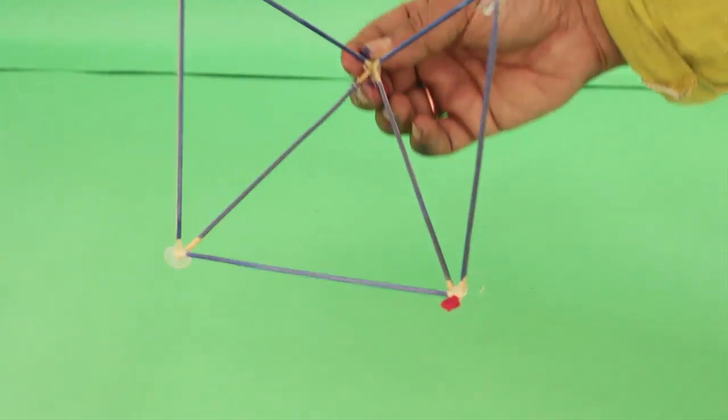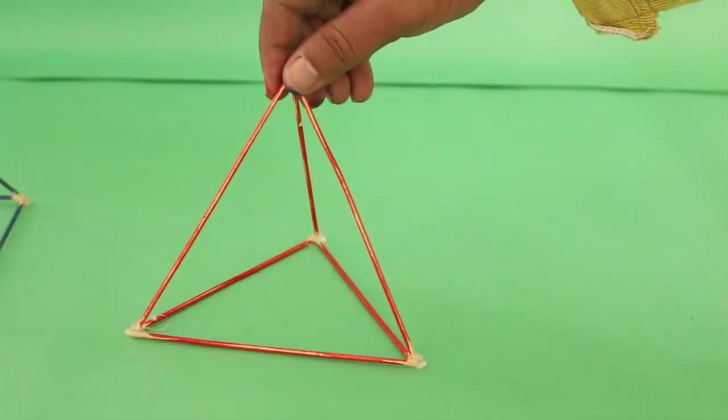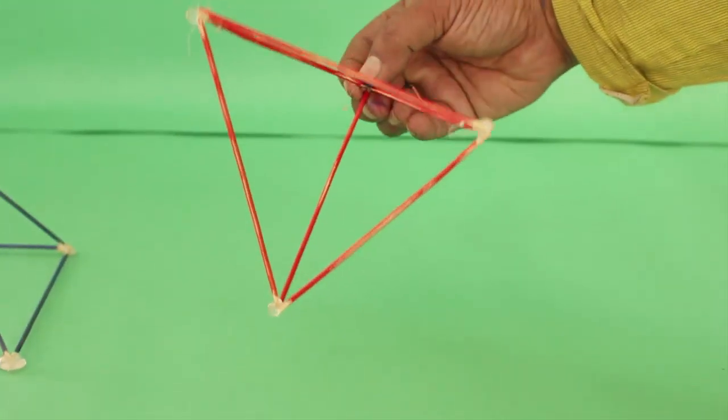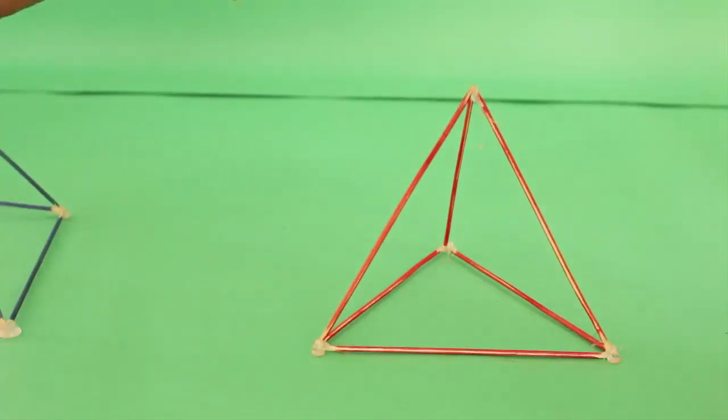Now here is a square pyramid. It has a square base and 4 triangular sides. This red one is a tetrahedron with a triangular base and 3 triangular sides.